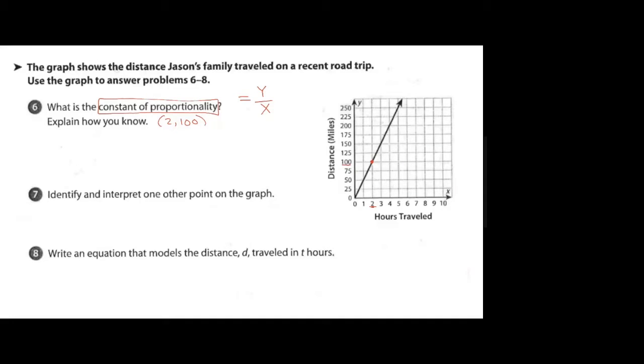And I can find the constant of proportionality of y over x, so 100 over 2 is equal to 50. And then I have to put units in, and again the units are going to be the y over the x. So the y units are miles and the x units are hours, so it's miles per hour.